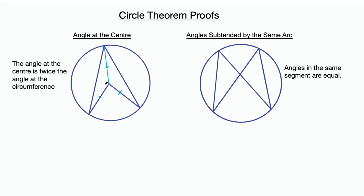I'm going to label this angle A, this one B, this one C, and this one D. Another way of doing this is to label the points — calling them A, B, and C. It's really up to you; I just prefer to label the angles. But it's more important that you understand the theorem and the proof itself.